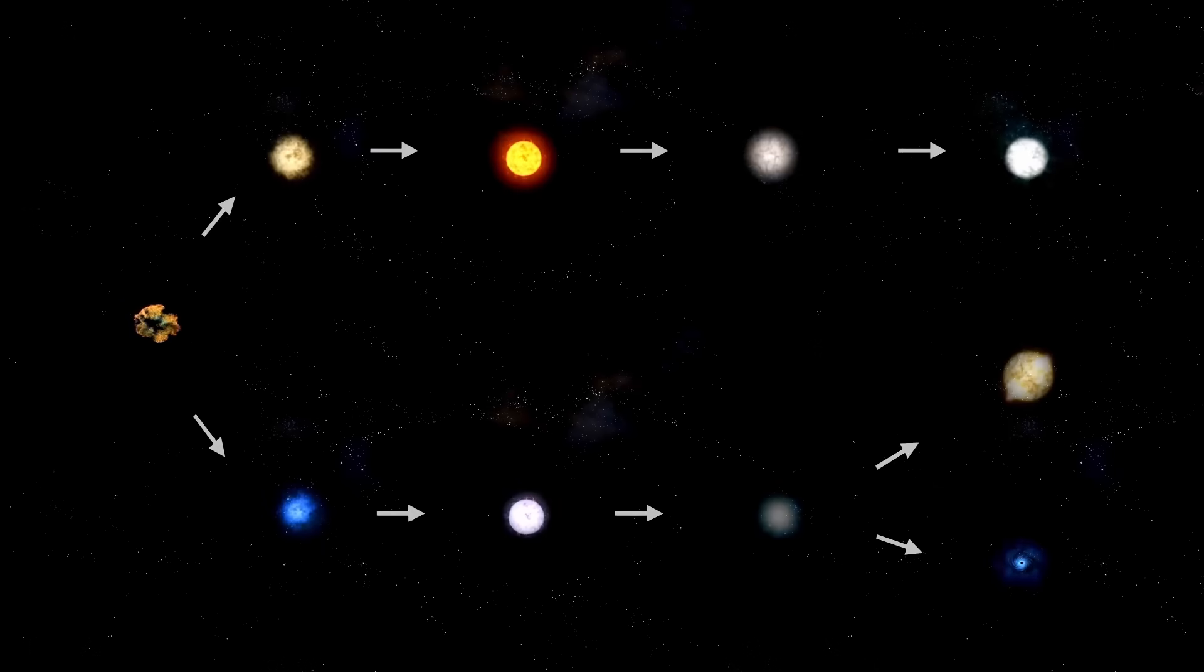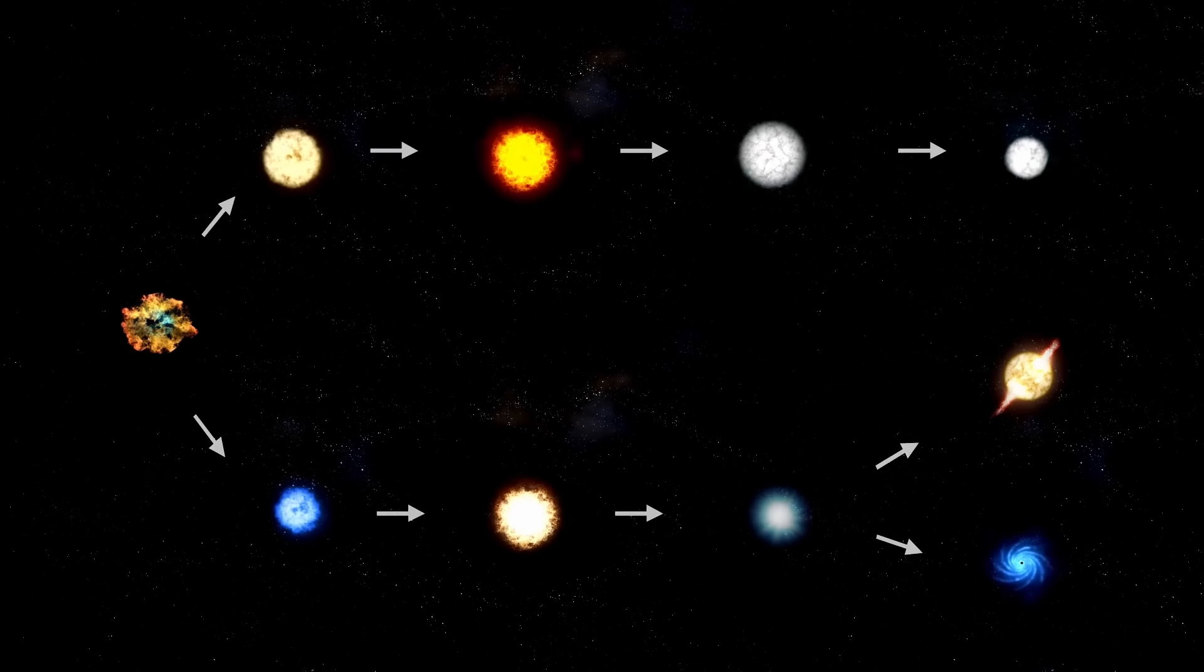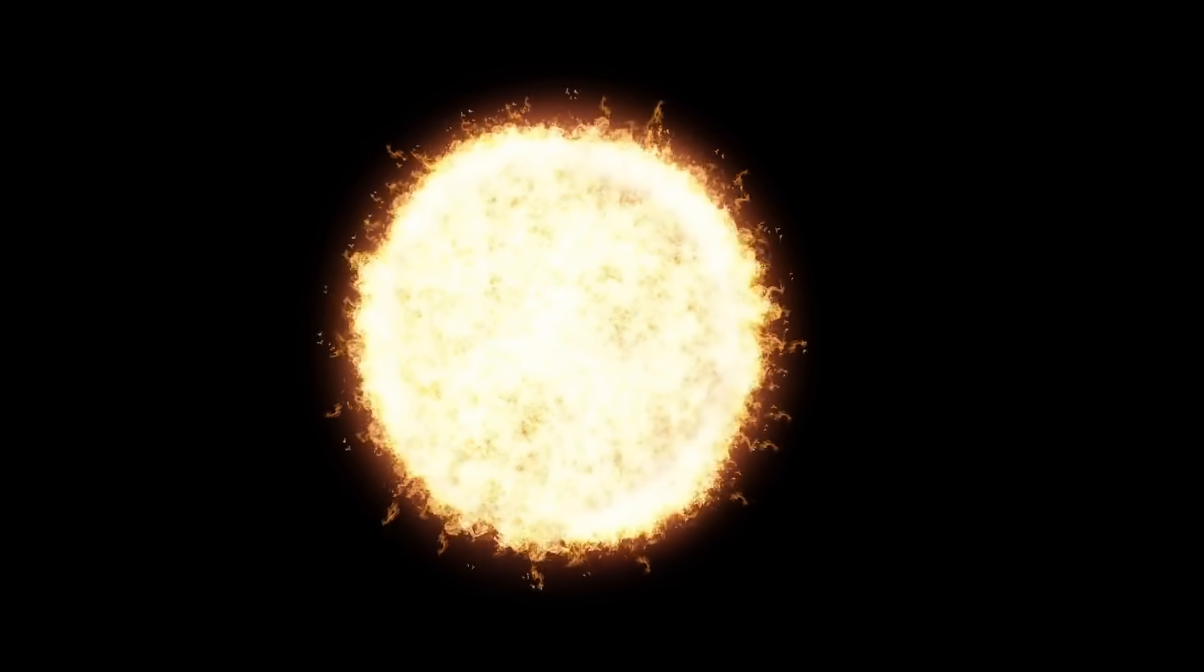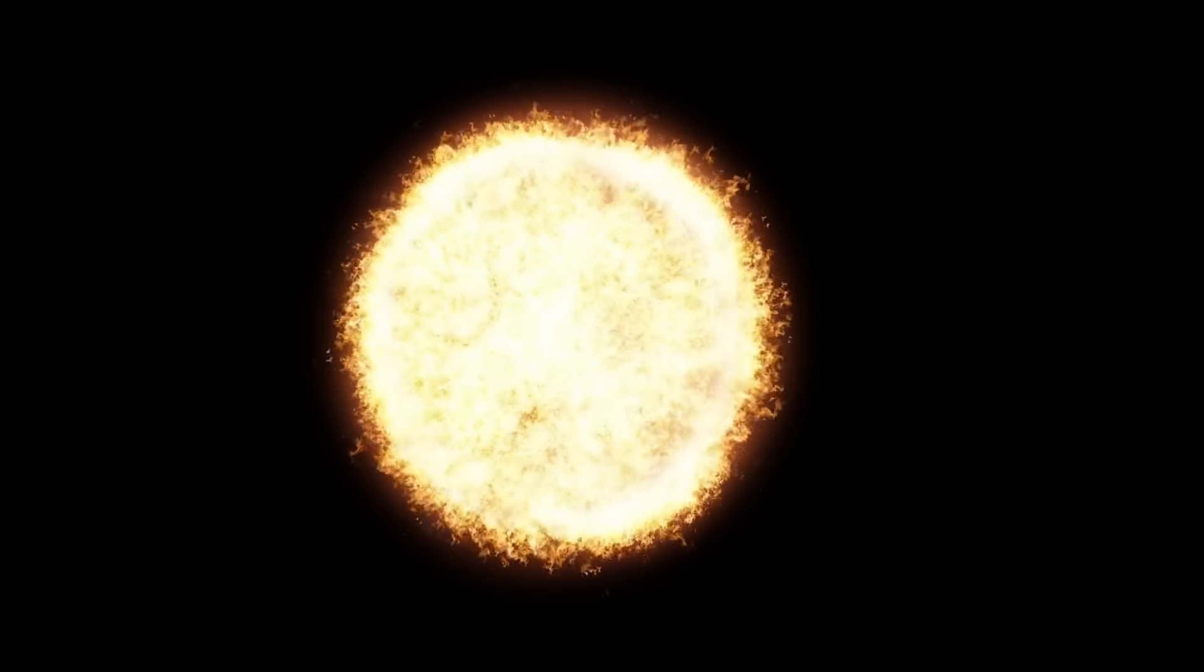The minor planet center and participating observatories updated orbital solutions as new positions arrived. The improved fits revealed a hyperbolic eccentricity, a key number showing the object is not bound to the sun.